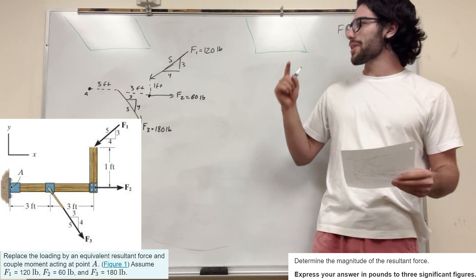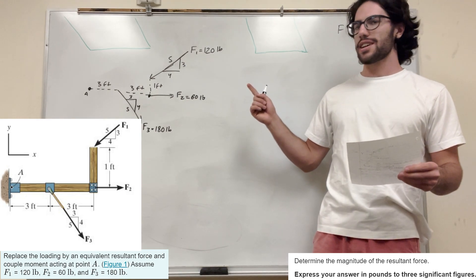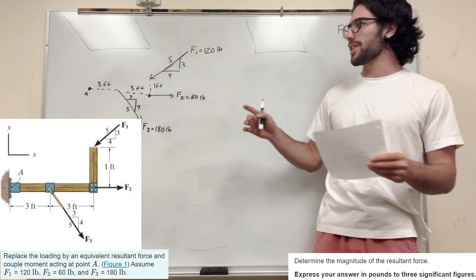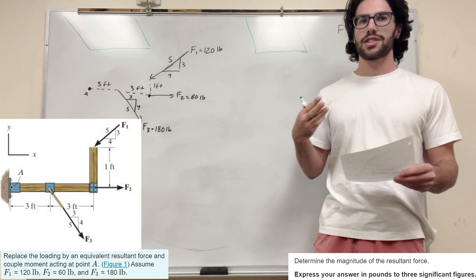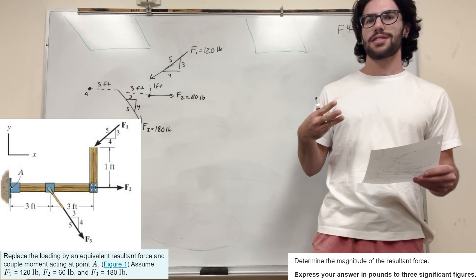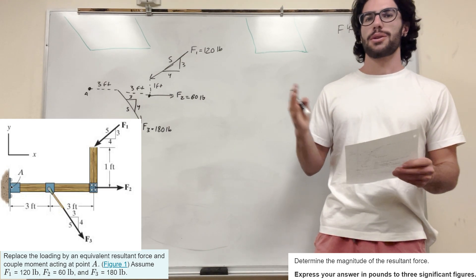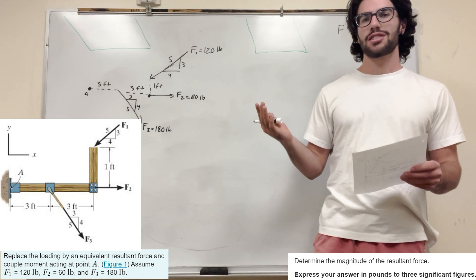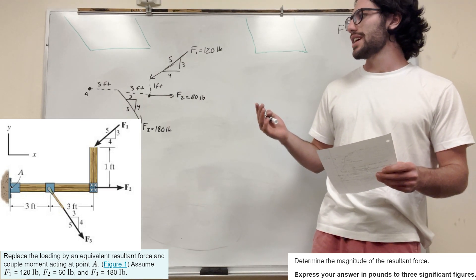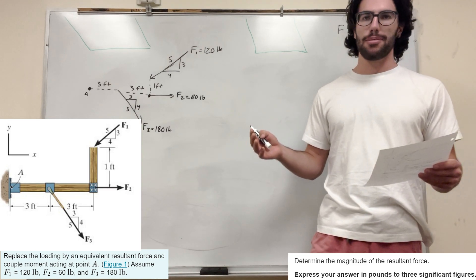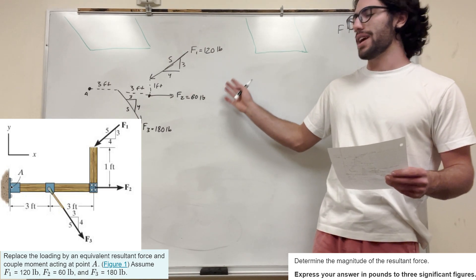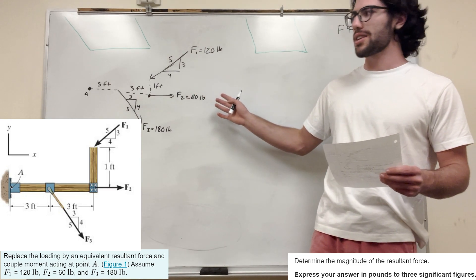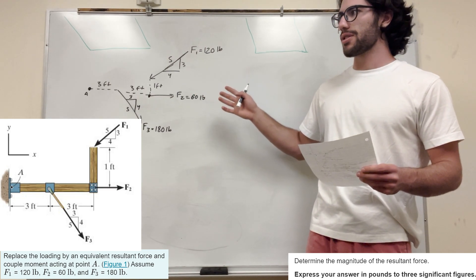What's up Cal gang? So we got this moment problem here. There are three parts to it. First, it wants us to find the resultant force. It wants us to find the angle of the resultant force. And then it wants us to find the moment around A. I went ahead and made a little diagram here for our forces.